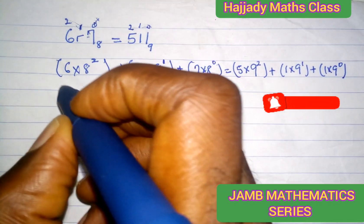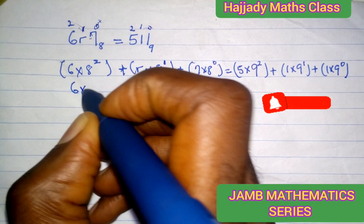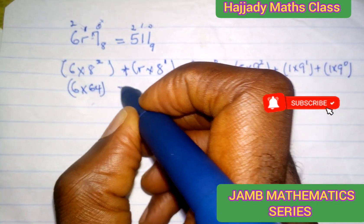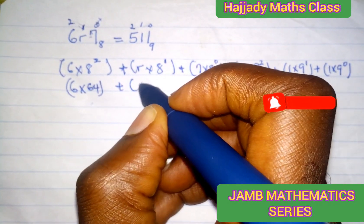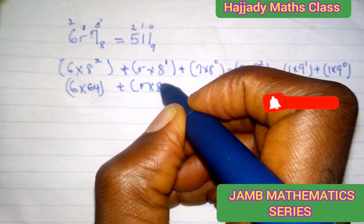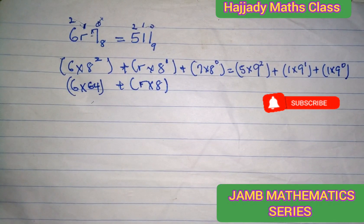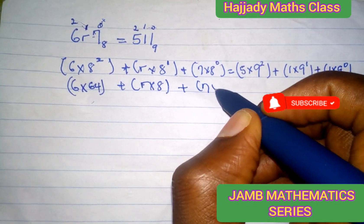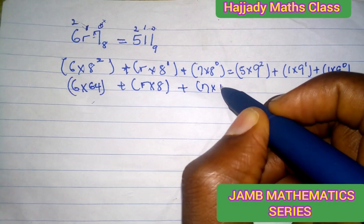And in doing this, we have 6 times the base, which gives 64, plus R times the base, which gives 8, plus 7 times anything raised to the power of 0 gives 1.